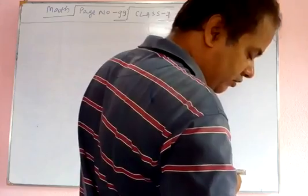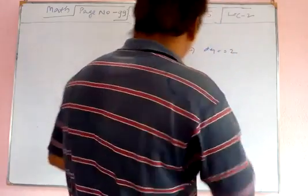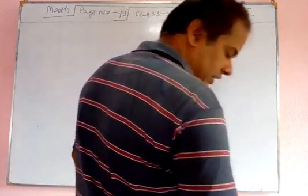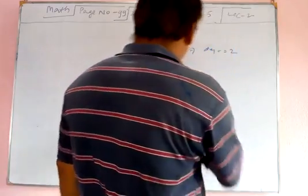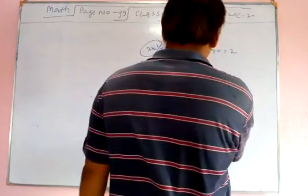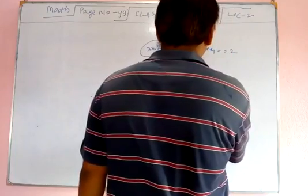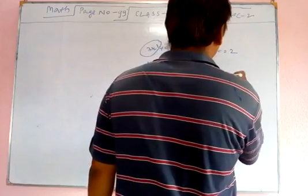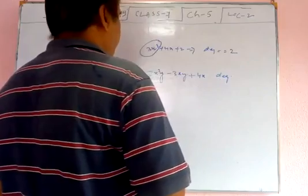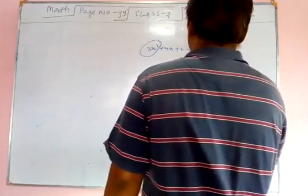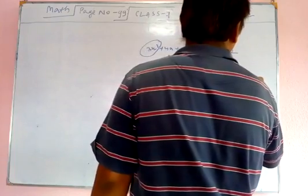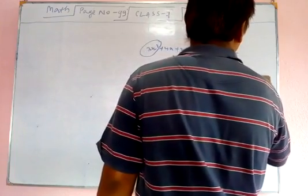For the polynomial 2x²y minus 3xy plus 4x, the highest degree term is 2x²y, where the sum of powers is 2 plus 1 equals 3. So the degree of this polynomial is 3.